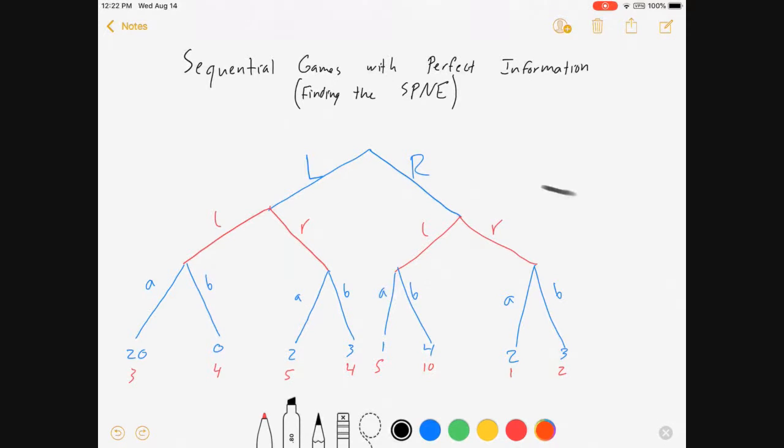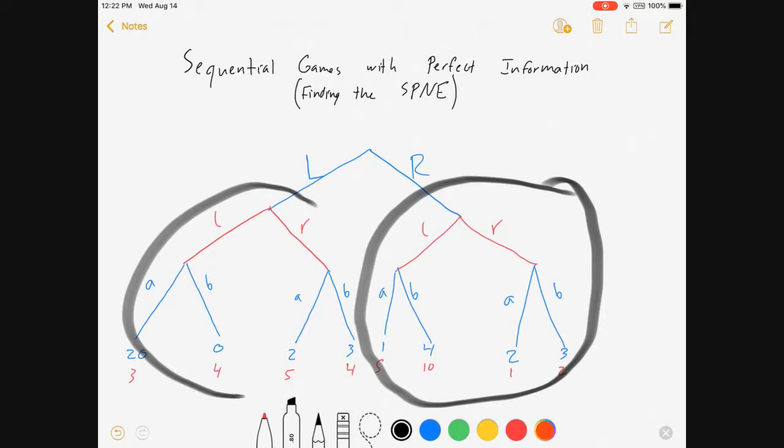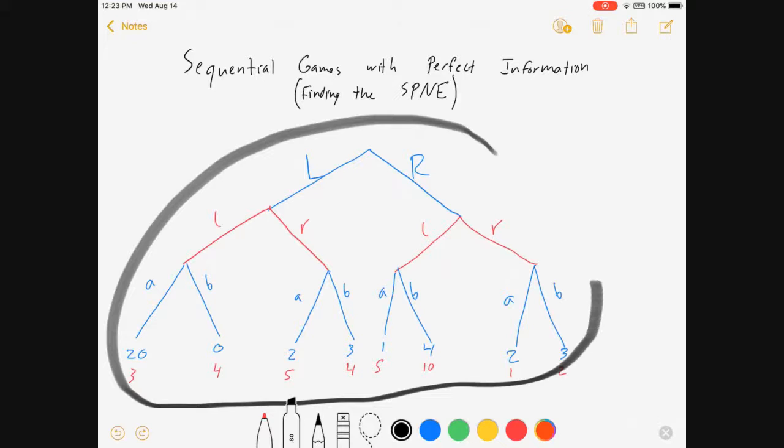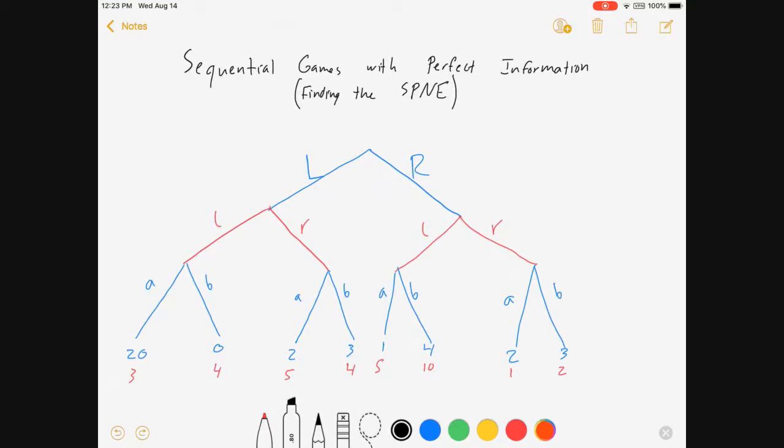But that's not all of it. There are also sub-games here and here. Because once again, we've got decision nodes at the head of a game. And so when I look at this chunk on either of these sides, that's like a whole game in and of itself. Only it's a subset of this larger game. Alright, so there's our start.